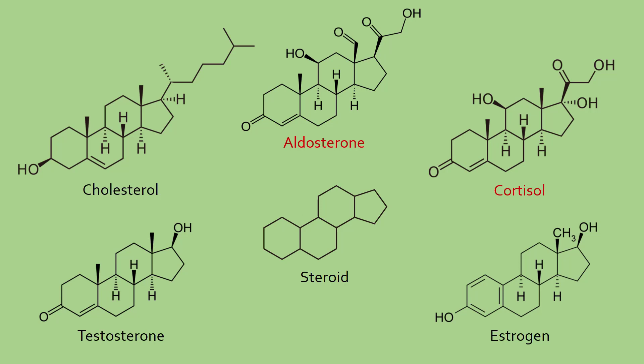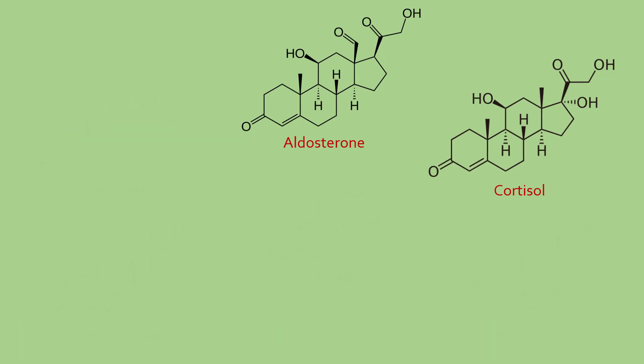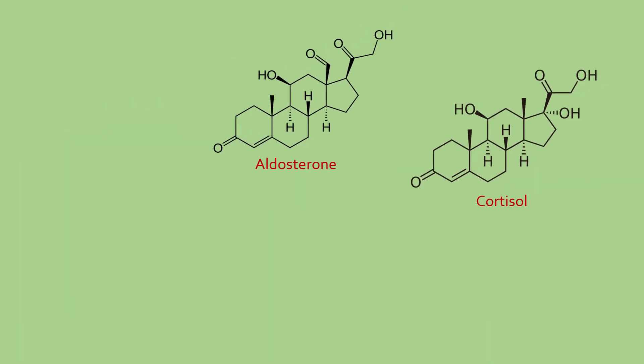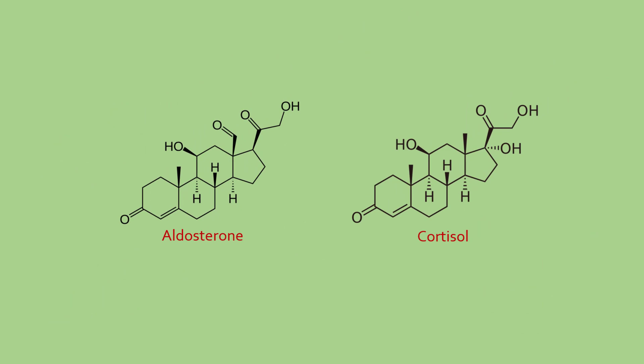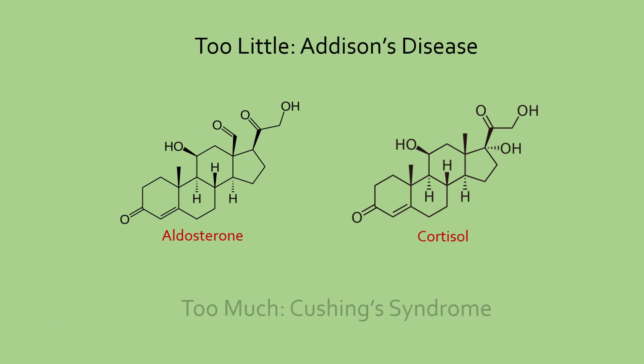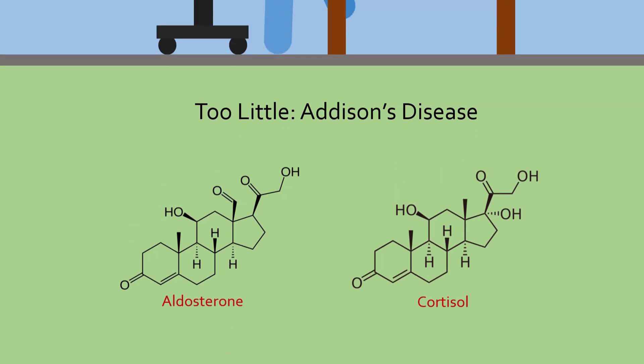Join me in this two-part video on Medicurio, where we will discuss the two diseases that occur if someone has too little or too much of these corticosteroids: Addison's disease and Cushing's syndrome.